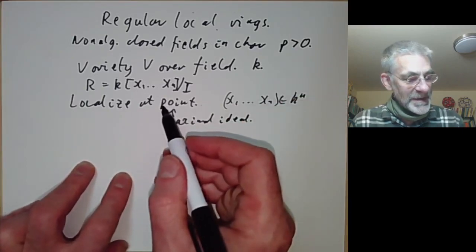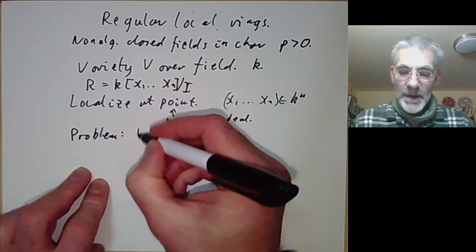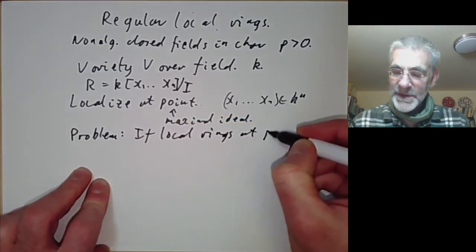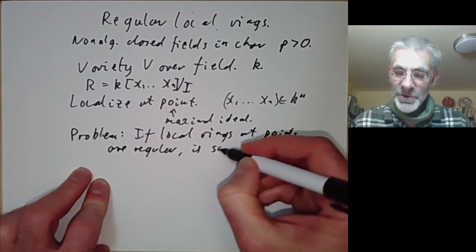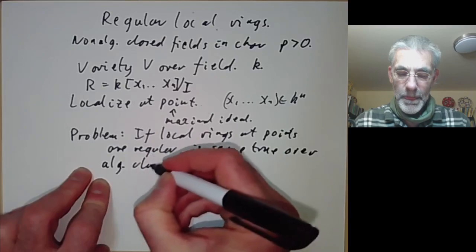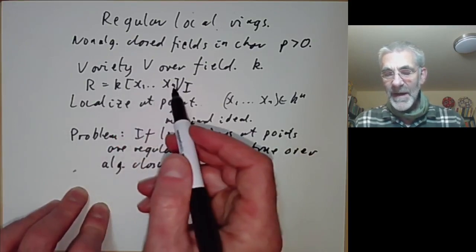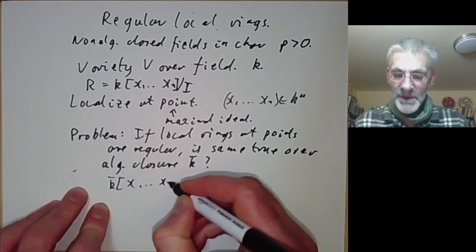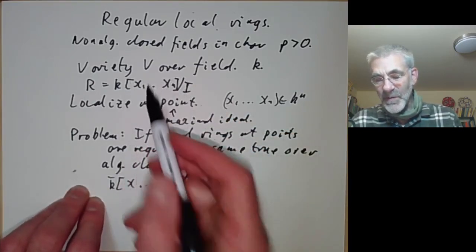We can take the local ring at this point and ask the following problem: if the local rings at the points are regular, is the same true over the algebraic closure k-bar? Instead of taking the ring of polynomials over k we take the ring of polynomials over the algebraic closure in n variables and again quotient out by the ideal I. So if all these local rings are regular, are these ones?